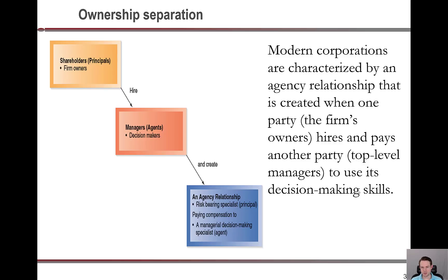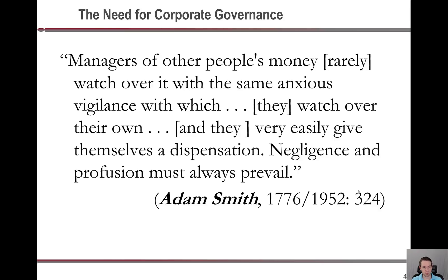Modern corporations are characterized by what is called an agency relationship, created when one party — in this case the firm's owner — hires and pays another party — in this case top-level managers — to use its decision-making skills on its behalf, to be its agent. This separates the ownership of the firm from those actually running the firm, creating the need for corporate governance because this separation of ownership can cause agency problems.